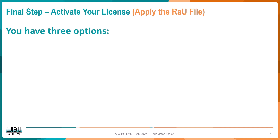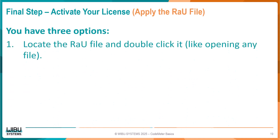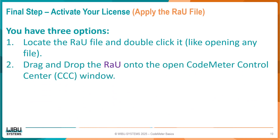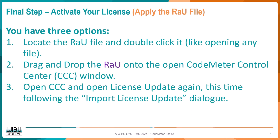You have three options for importing the RAU file into Codemeter. Option 1: Locate the RAU file and double-click it, like opening any file. Option 2: Drag and drop the RAU onto the open Codemeter Control Center (CCC) window. Option 3: Open CCC and open the License Update Field Activation Service again, this time following the Import License Update dialog.